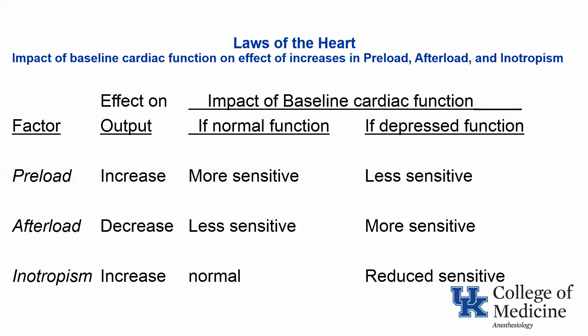On this slide, I have summarized the impact of baseline cardiac function on the effect of increasing preload, afterload, and inotropism. In regard to preload, normally it increases function of the ventricle; the normal heart is quite sensitive to preload, whereas the depressed heart is less sensitive. Afterload increases normally cause a decrease in output; the normal ventricle is less sensitive to increases in afterload, whereas the ventricle with depressed function is more sensitive to afterload. In regards to inotropism, it normally increases function; in the normal heart the response is normal, but in the depressed heart the response to inotropic stimuli is reduced.